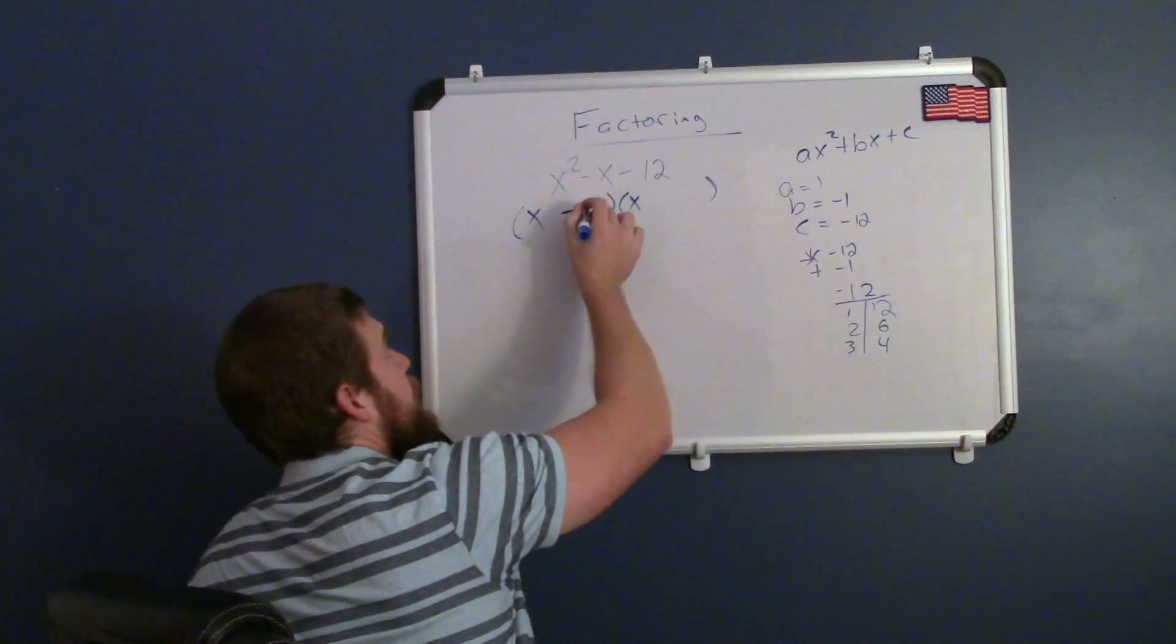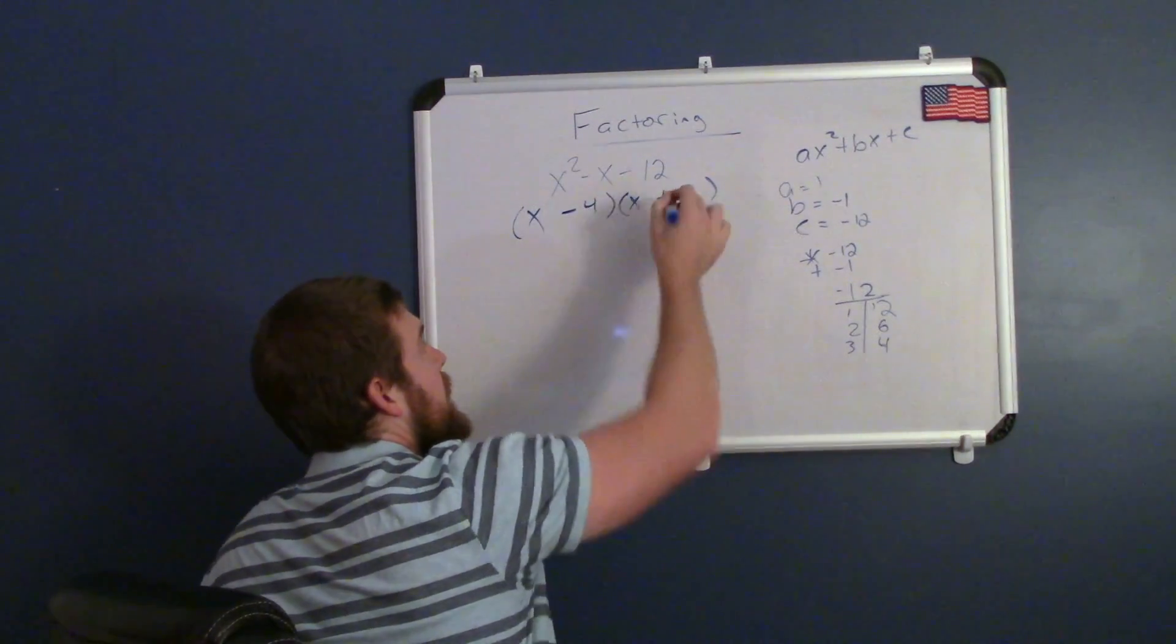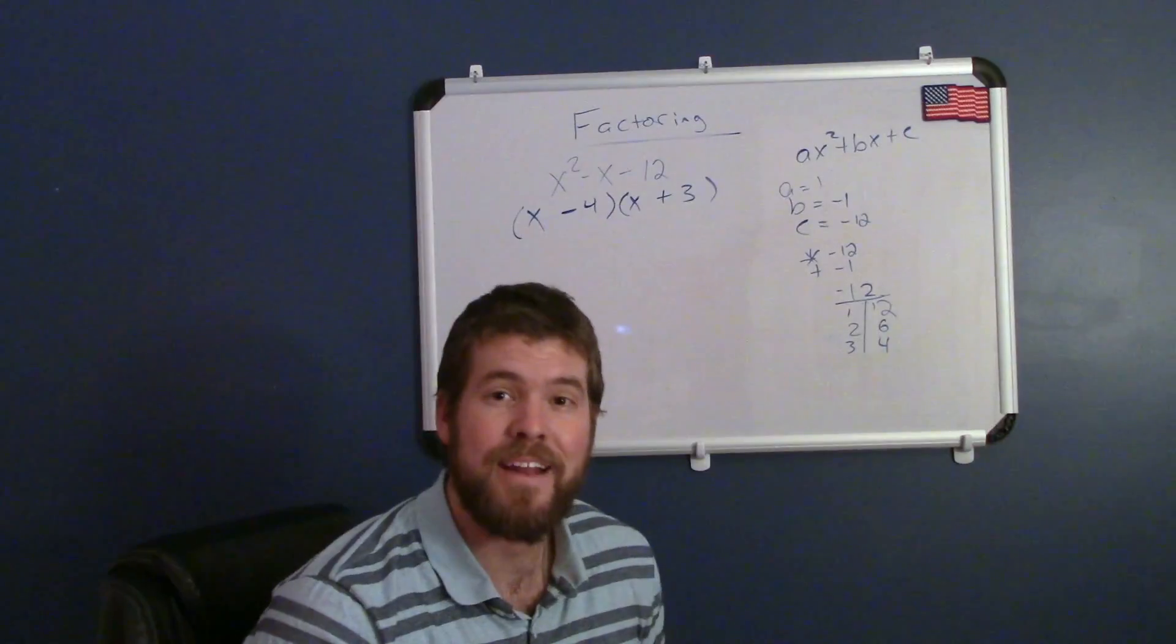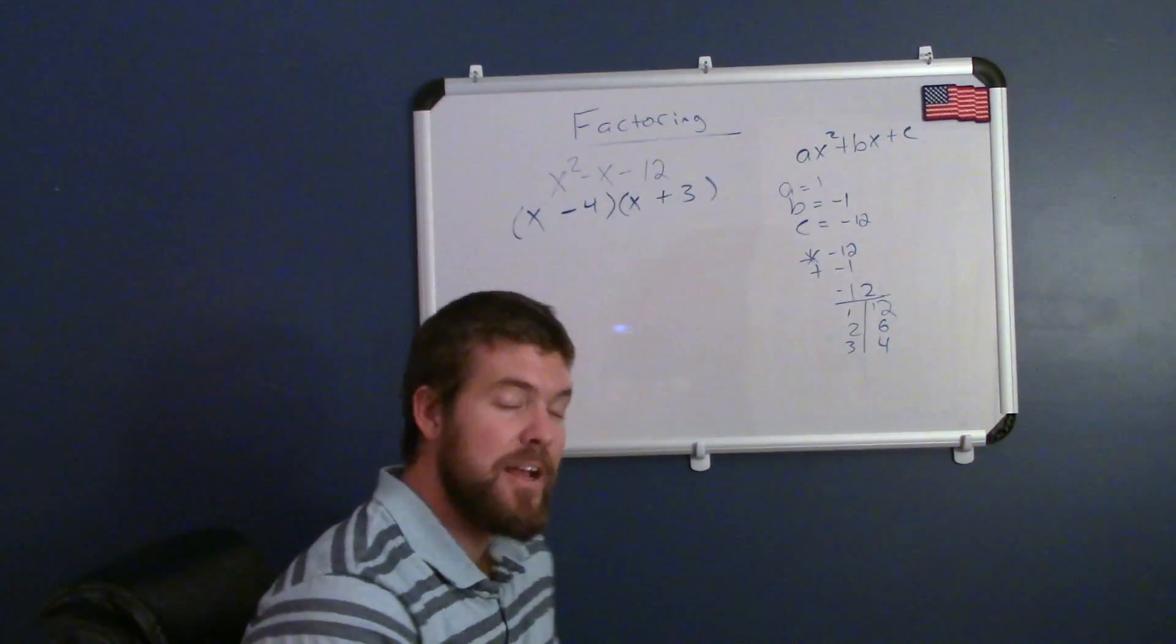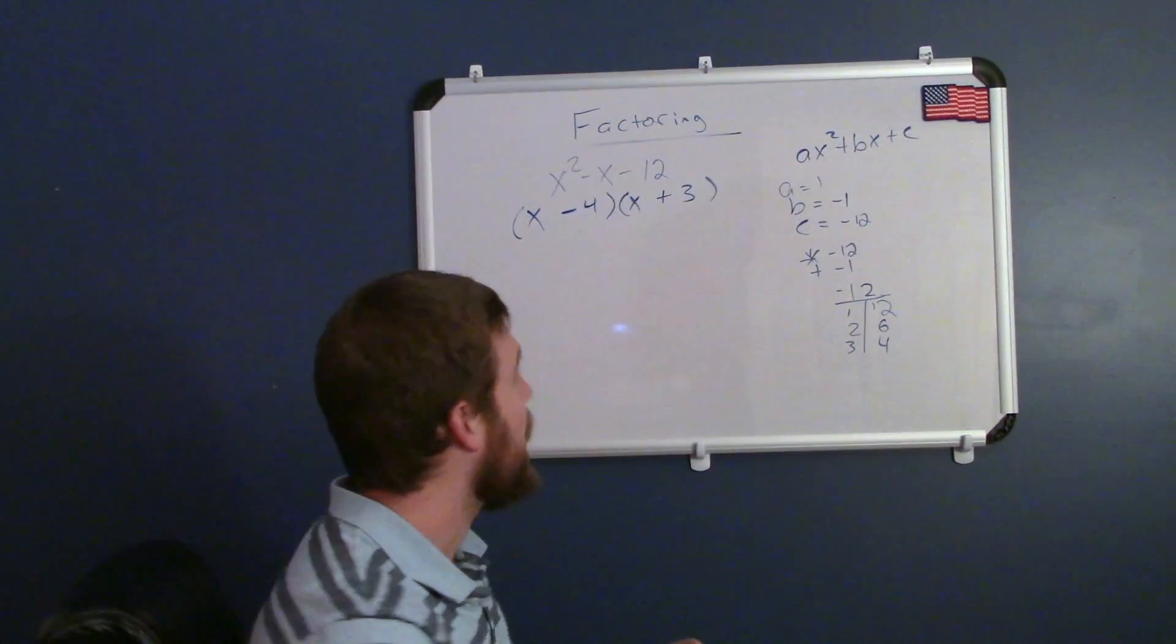So, I said negative 4 and a positive 3, and together those two numbers would add to be a negative 1, but multiply to be a negative 12. So, let's check our work and see if it actually comes full circle.